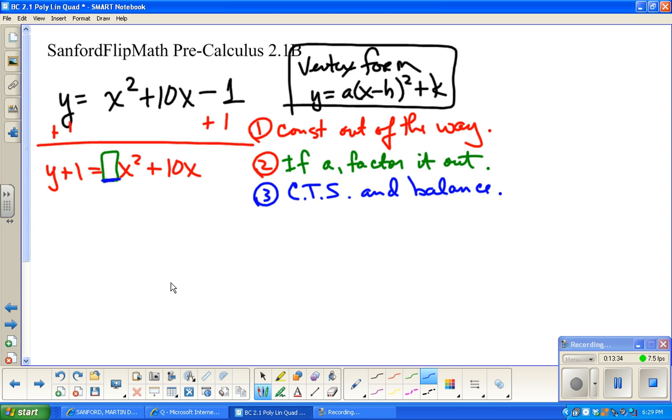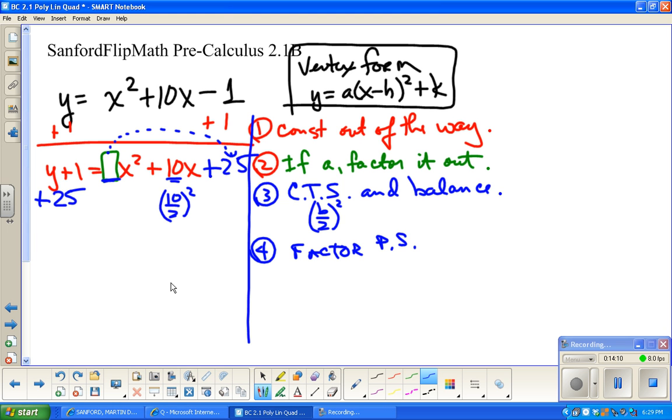This is the b. So 10 over 2 squared, in other words 5 squared plus 25. So 5 squared is 25. Just again a reminder, if there was something multiplying out here, you would have to distribute that over so that when you balanced on the other side, it would take that into account. Next step, factor the perfect square and combine like terms, any simplifying as you go along.